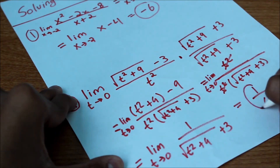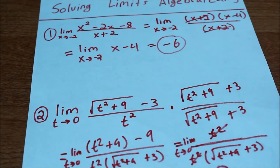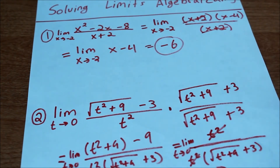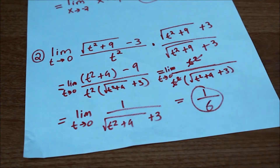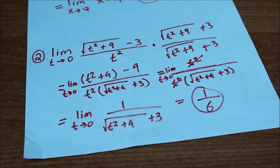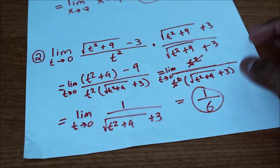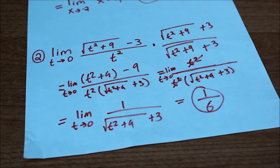Plugging in 0, we get 1 over (√9 plus 3), which equals 1 over 6 — and that's the answer. By multiplying by the conjugate, we were able to change this function, which originally had an indeterminate form, into something that gave us a defined answer. So if you see a function with a square root in the numerator or denominator, a good idea is to multiply by its conjugate.